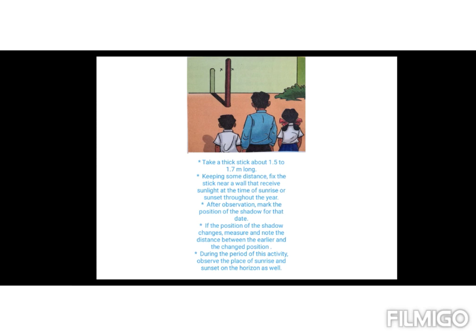After the observation, mark the position of the shadow for that date. If the position of the shadow changes, measure and note the distance between the earlier and the changed position.